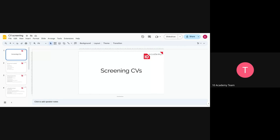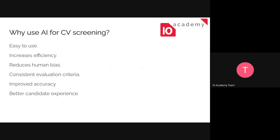This session is an overview and demonstration of how we can use AI or LLMs such as ChatGPT and others to aid us in the screening process - specifically to help us screen CVs received from candidates. As a start, let's begin with why we would want to use AI for screening. The first thing is it's easy to use.